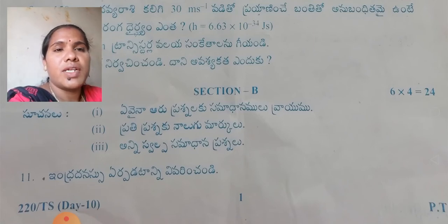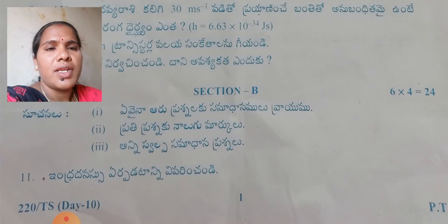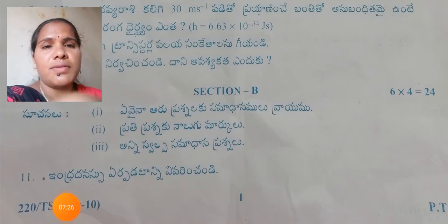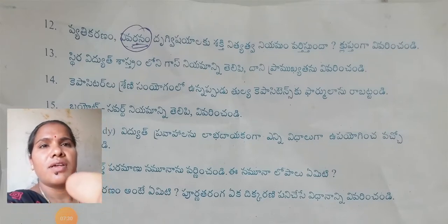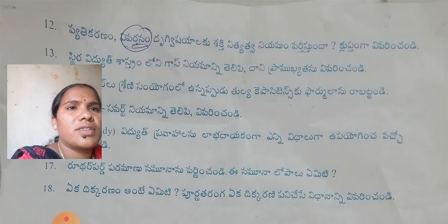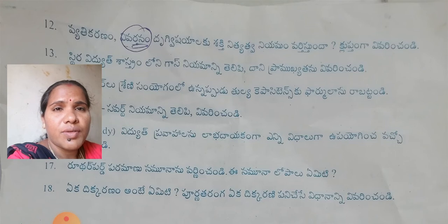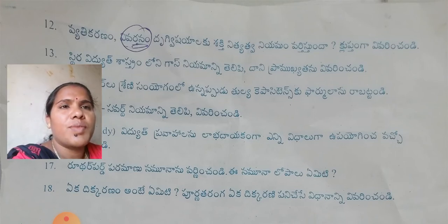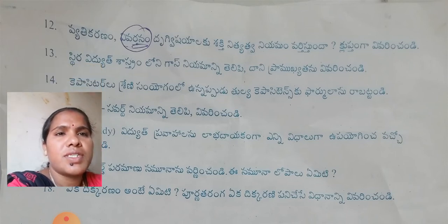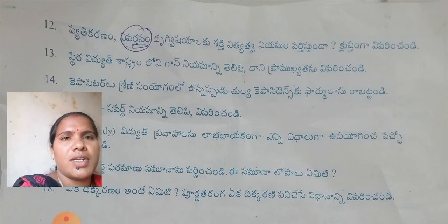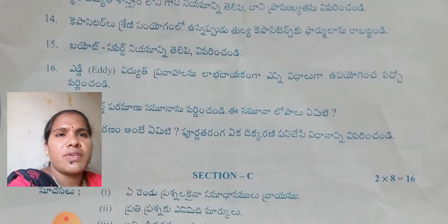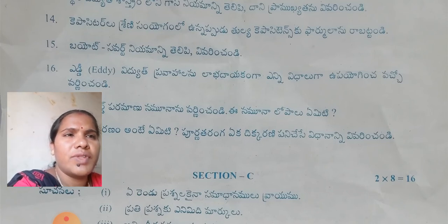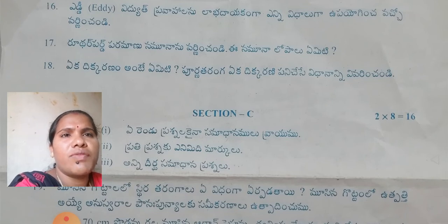You have to attempt only 6 questions in Section B. Topics include: Vivartanam, Drigvishyaalak, Shekthi Nithyatva Niyamam — explain these. Next: video Shastram gas laws — state and prove them. Next: Capacitor series combination — find the equivalent capacitance. Next: Bio-Savart law — state and prove it.